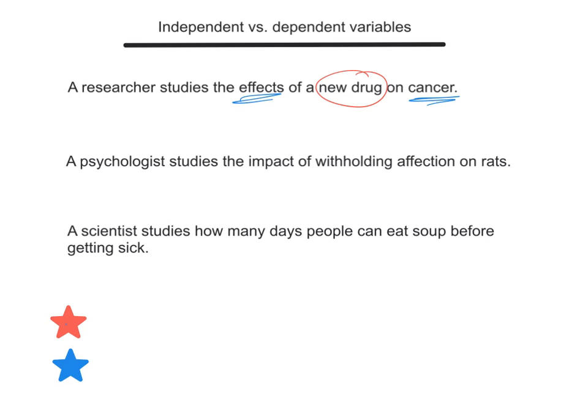A psychologist studies the impact of withholding affection on rats. The independent variable would be the amount of affection — are they giving a lot of affection or not a lot of affection? The dependent variable would be the impact. If they're giving a lot of affection, then the rats are faster, they can memorize things quicker. Or if they're not giving a lot of affection, what's the negative impact — solidarity, sulking around in their cage?